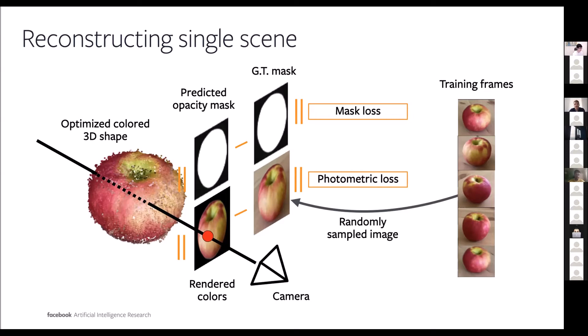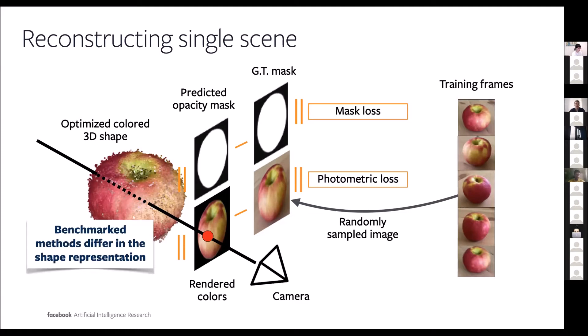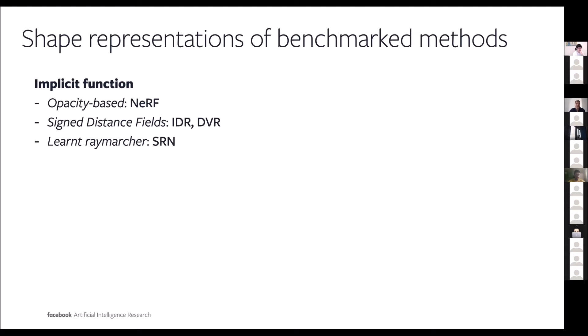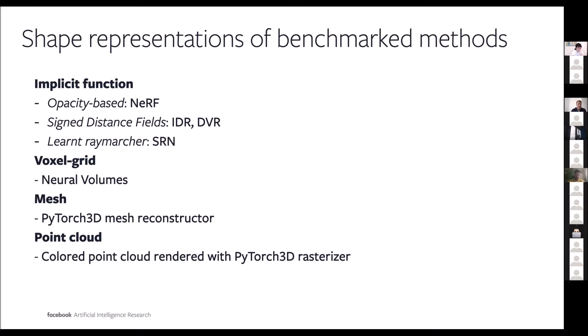Together with that, we also have ground truth opacity masks from the Pointrend segmenter, which we match to the predicted rendered opacity mask. All benchmark baselines essentially follow this learning pipeline but differ in how they represent the 3D shape being optimized. We tried to cover all possible popular shape representations — opacity-based implicit functions such as NeRF, signed distance field functions such as IDR, learned ray marchers implemented using SRN, voxel grid neural volumes, and mesh and point cloud-based constructs — roughly 13 baselines in total. We also endowed some baselines with the positional embedding trick.